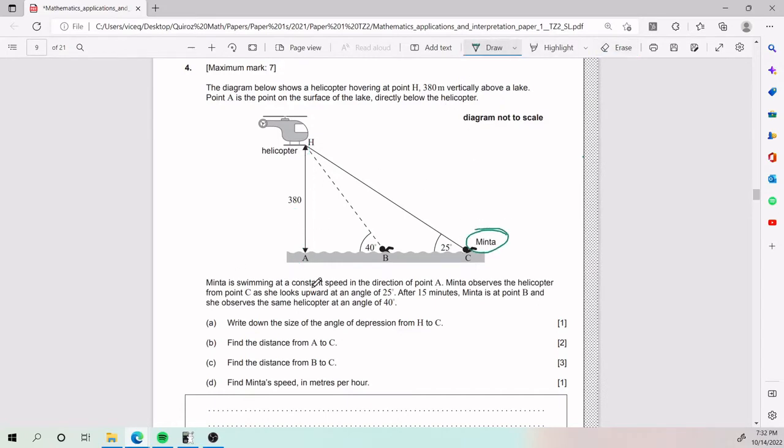Menta, which is right here, is swimming at a constant rate in the direction of point A, which is that way. Menta observes the helicopter from point C as she looks upward at an angle of 25 degrees. After 25 minutes, Menta is at point B, and she now observes at a degree of 40. So for part A, we need to write down the angle of depression from H to C.